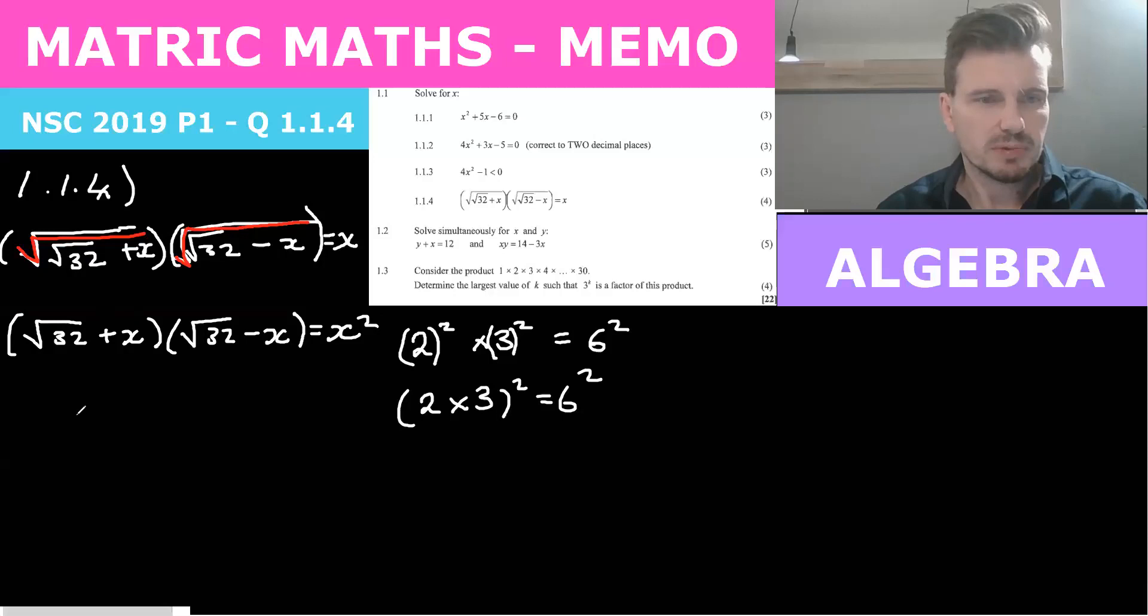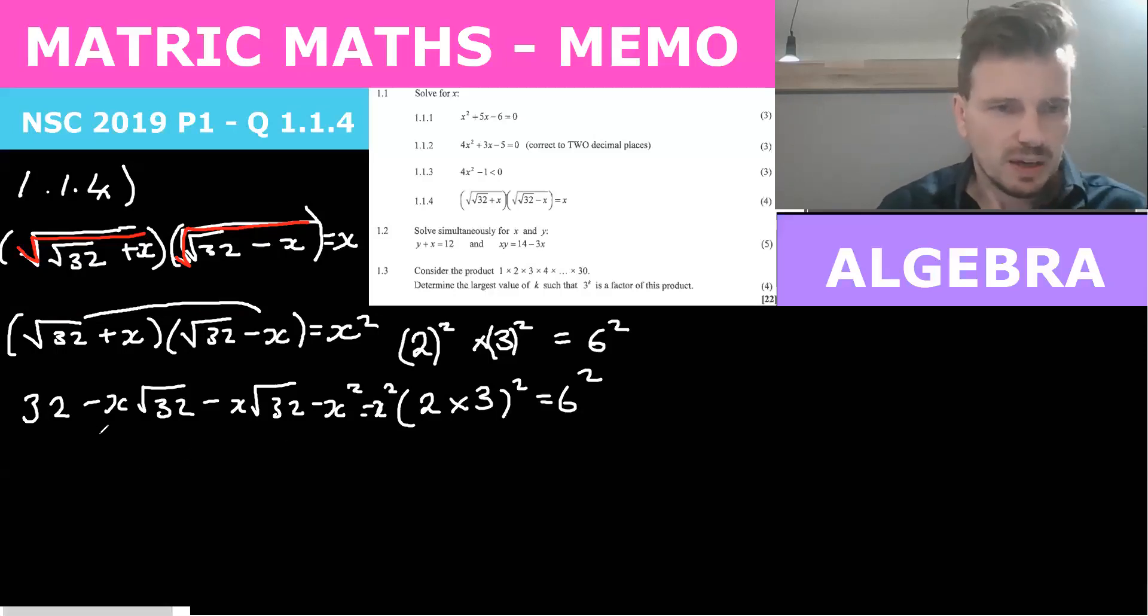Okay, now root 32 times root 32 is 32. When we times these out, the root 32s will cancel, but let's just do it anyway. So we've got root 32 times x, which is minus x times root 32. We have plus x root 32. And we have minus x squared. Right, so now these go away. And we have 32 minus, we bring this other x squared and we get 2x squared equals 0.